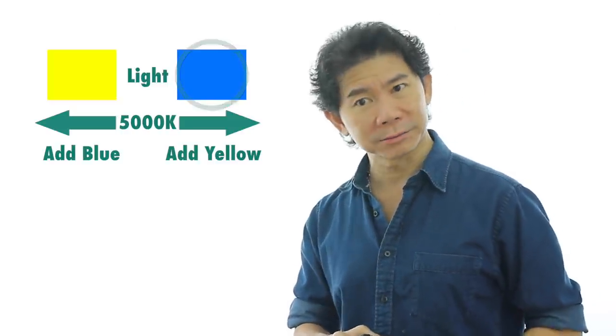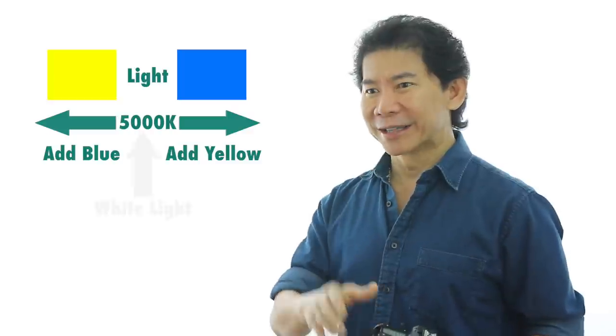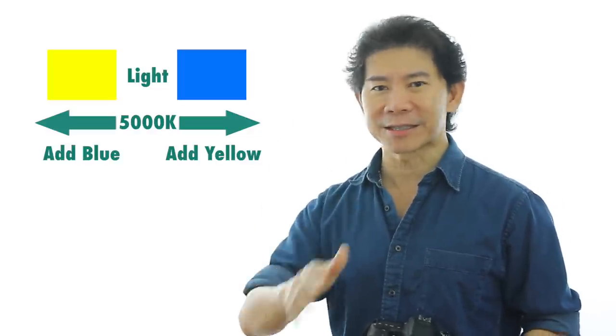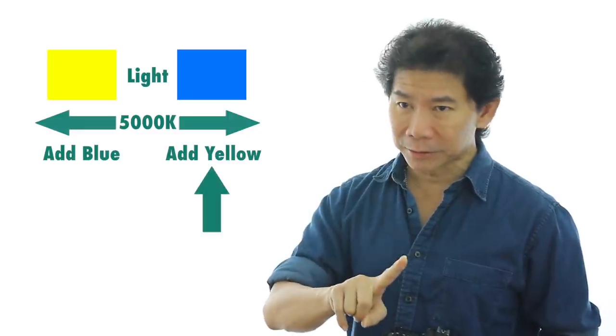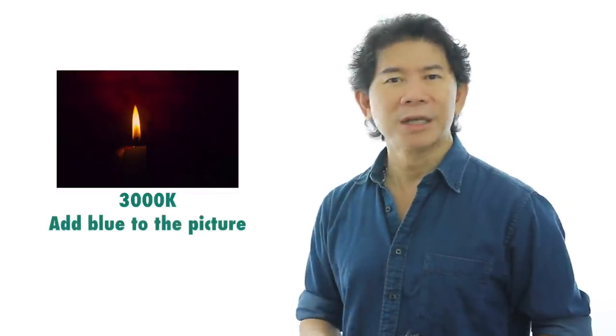But why does it seem reversed in your camera? It's not reversed. What you're telling the camera is what you're shooting is actually bluish, so the camera says: let me add yellow for you. When you increase the Kelvin value above 5000 — like 6000 or 7000 — you are actually adding yellow to compensate for what you're shooting, which is blue. Conversely, if you were to shoot a candle flame, which is yellow and burning at a lower Kelvin like 3000, what the camera does at 3000 is add blue. That's why it looks opposite when you look at a camera, but it's not exactly opposite — you're telling the camera what you're shooting and what its Kelvin is.